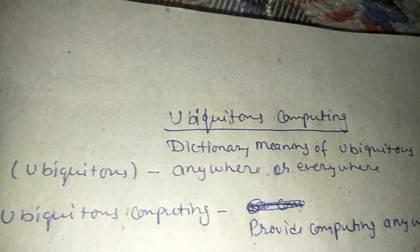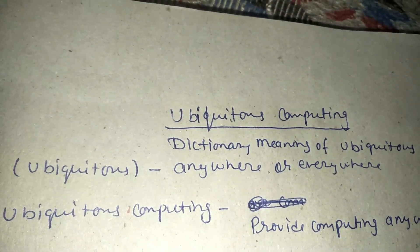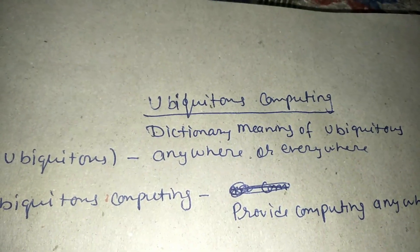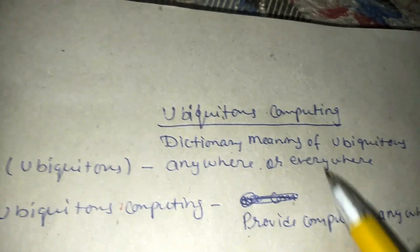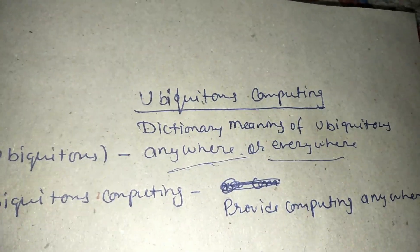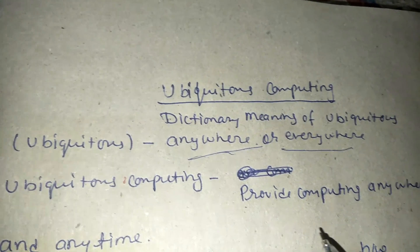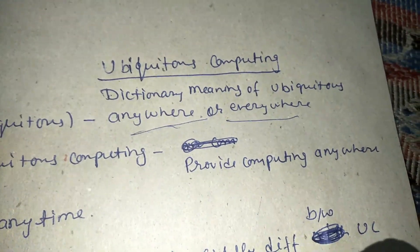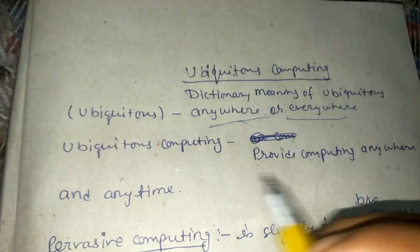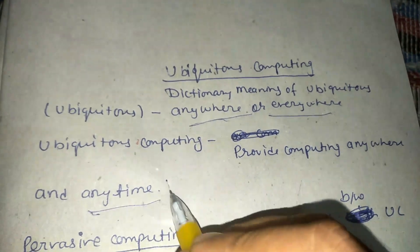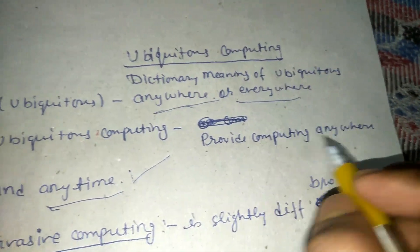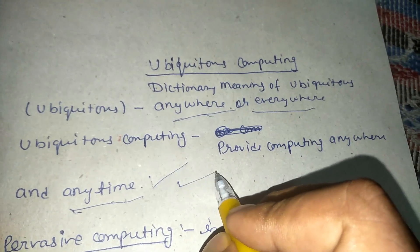First, we have to know the dictionary meaning of ubiquitous. The dictionary meaning of ubiquitous is anywhere or everywhere. So, ubiquitous computing is nothing but providing computing functionality anywhere and anytime.